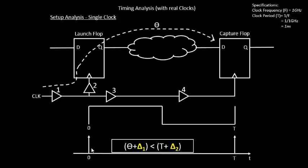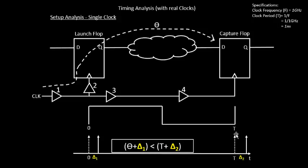Initially, the arrow which was at zero — the reason it was at zero was that the clock was supposed to reach the launch flop clock endpoint at zero nanoseconds — and the arrow was placed at T because the second edge of the clock was supposed to reach the capture flop clock endpoint at T nanoseconds, which is one nanosecond. But now with the clock network coming into picture, the arrow which was supposed to be at zero is now shifted by delta1, and similarly the arrow at the right-hand side which was supposed to be at T is now shifted by delta2.